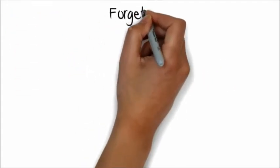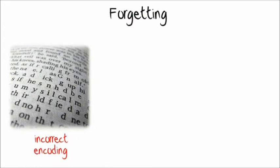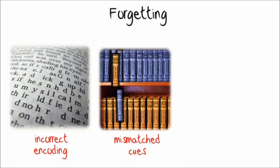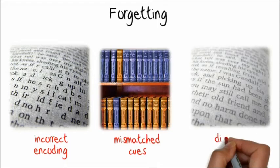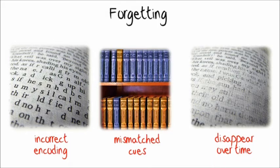However, forgetting can occur as a result from incorrectly or incompletely encoded memories, and problems with the retrieval process. Moreover, some authors hold that long-term memories do actually decay and disappear completely over time.